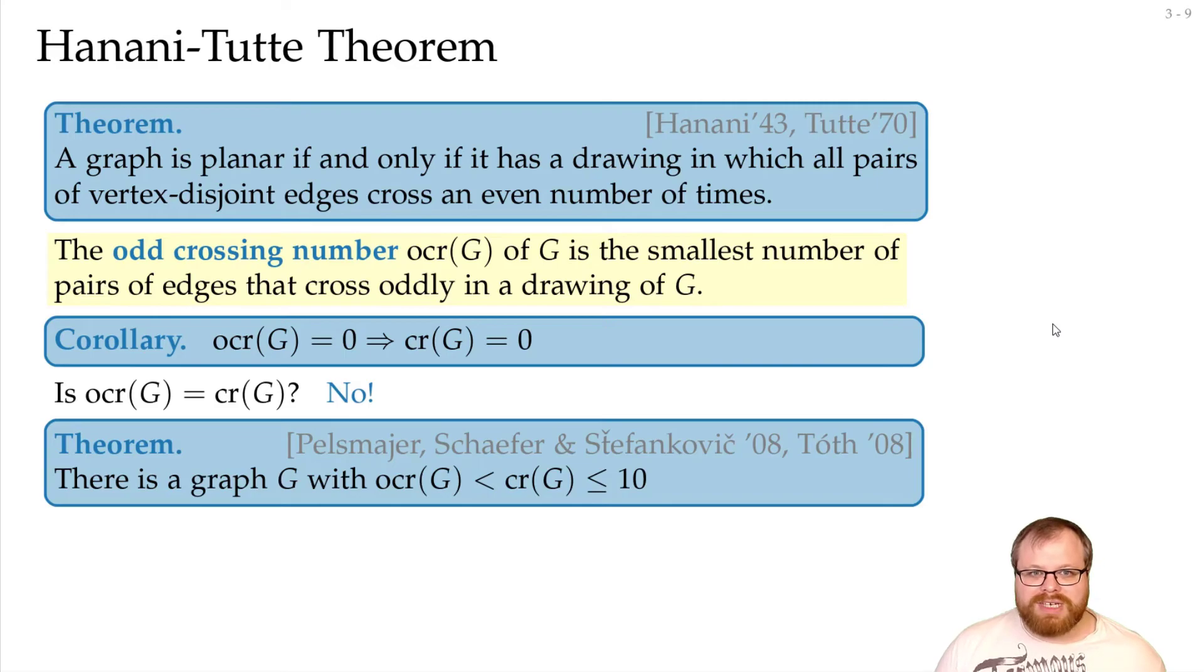And that means we cannot take any drawing and do some rerouting to just have exactly one crossing between every pair of edges that cross an odd number and zero between every pairs of edges that cross an even number.